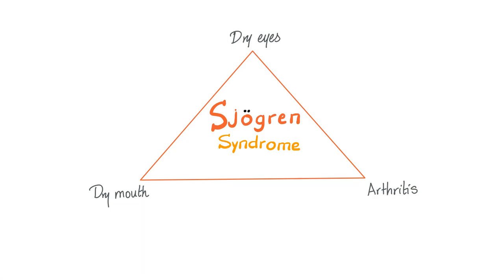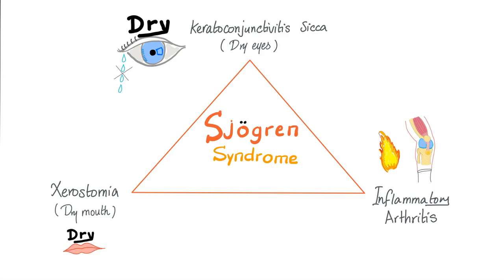Sjögren syndrome versus Sicca syndrome — what's the difference? Sjögren is a clinical triad: dry eyes, dry mouth, and arthritis. But let's use proper terminology. Don't say dry eyes — say keratoconjunctivitis sicca. Sicca means dry. And don't just say dry mouth — say xerostomia. Xero means dry; stoma is your mouth. If you remember biology, stomata are the pores of a leaf, because a stoma is literally a mouth.